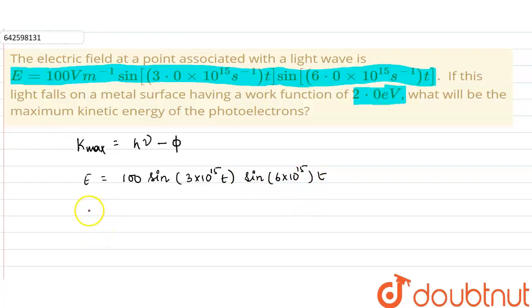Now we will use the expression of 2 sine a sine b as cos a minus b minus cos a plus b. So after using this expression,